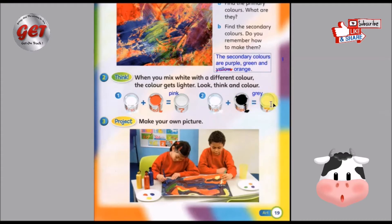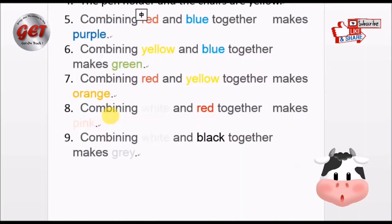好，当你用白色跟黑色混合过后呢，你得到的是比较浅的黑色，那就是灰色。好，我们来看，我们要怎样用英文来回答。Combining white and red together, mix pink. 这就是粉红色了。